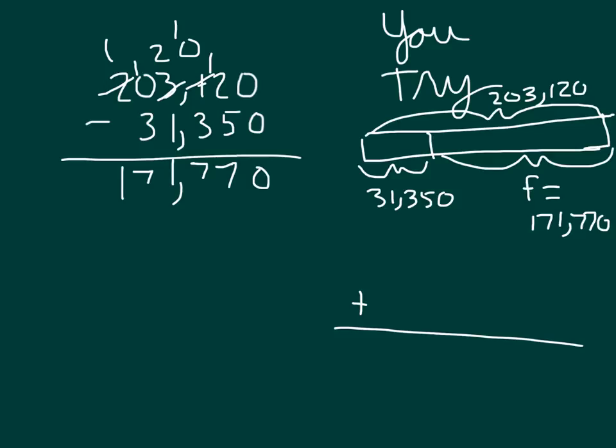To check, I will add this amount here, what I solved for, to the 31,350. If you didn't do your check yet, go ahead and pause the video while you set up your check. Carefully lining up those digits and running through my check, showing my regroups where I need to, does show me that 203,120, just like I had as my whole originally. So my answer is 171,770, and my check worked.